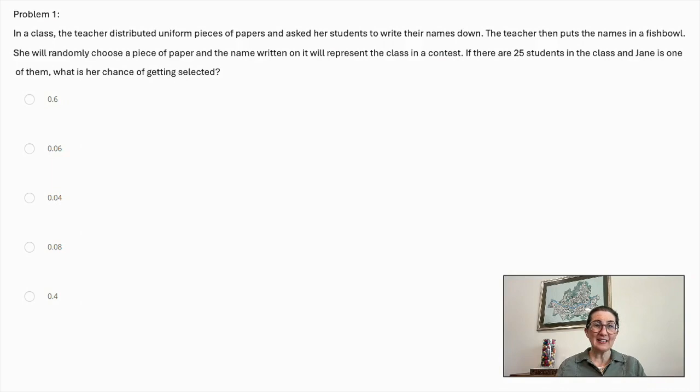Problem number one. In a class, the teacher distributed uniform pieces of papers and asked her students to write their names down. The teacher then puts the names in a fishbowl. She will randomly choose a piece of paper, and the name written on it will represent the class in a contest. If there are 25 students in the class, and Jane is one of them, what is her chance of getting selected?